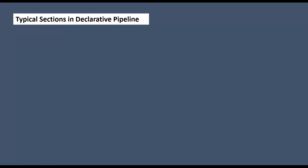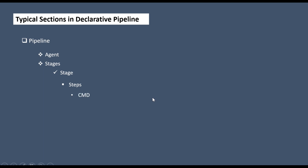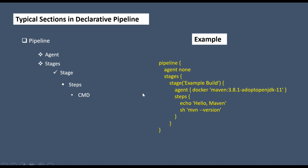Now I'm going to introduce you to the typical sections in a declarative pipeline. Whenever you write a pipeline script, you first write 'pipeline' with open-close curly braces, then define the agent. Inside the stages, you define the stage, then the steps, and under the steps you define the command. The agent is also optional at the stage level — you can use it at the entire pipeline level or at the stage level.